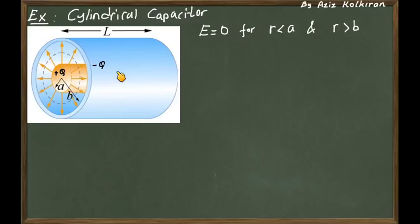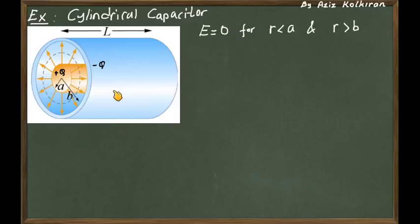Consider a cylindrical Gaussian surface that surrounds both conductors. The flux through this Gaussian surface will be zero because the total charge enclosed is zero — we have plus Q and minus Q inside, giving a net charge of zero.